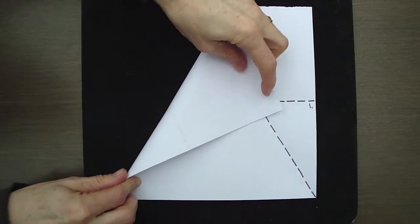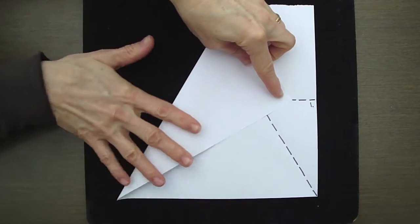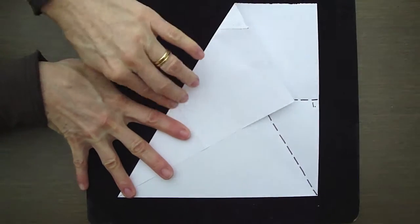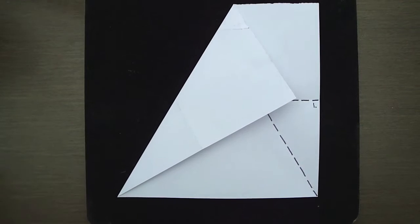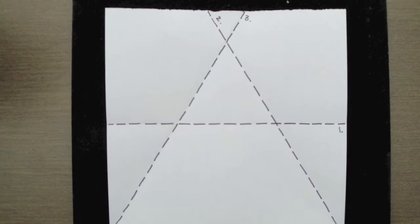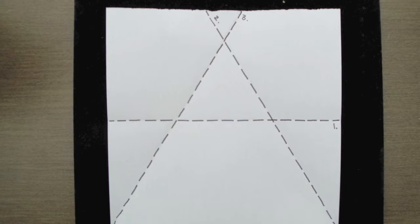Now we're going to do exactly the same on the other side, folding the top left hand corner towards the middle line with the point in the bottom left hand corner. You should then see an equilateral triangle.